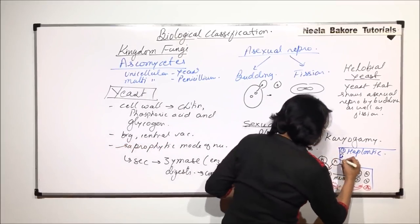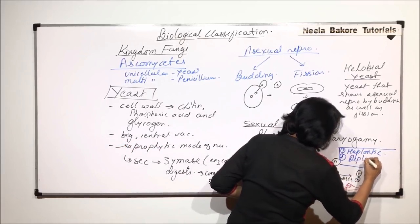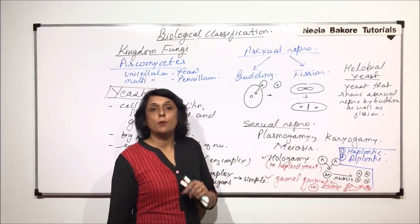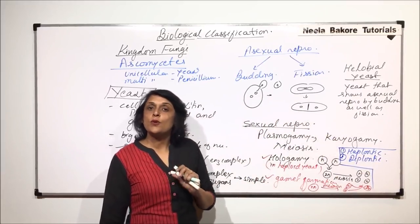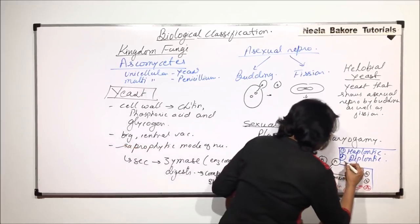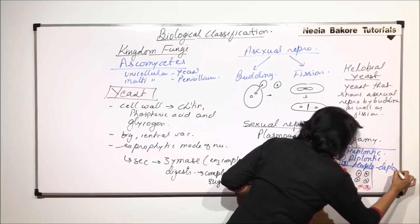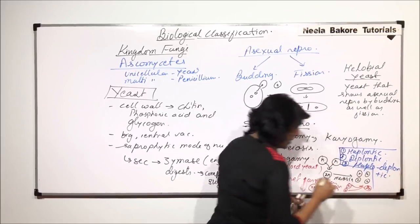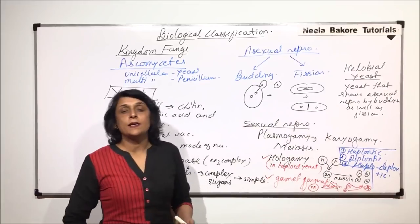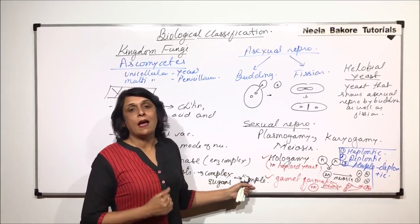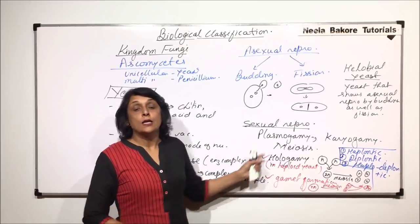The second one is diplontic, where it is just reverse. All the stages are diploid except for one stage which is going to be haploid. And third is called haplodiplontic. That means, here, half of the life cycle is spent as haploid cells and half as diploid cells.